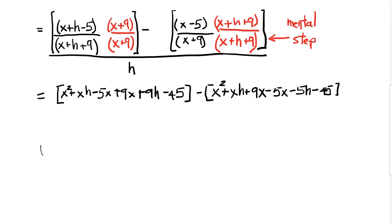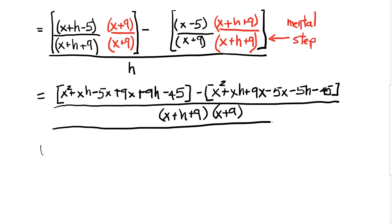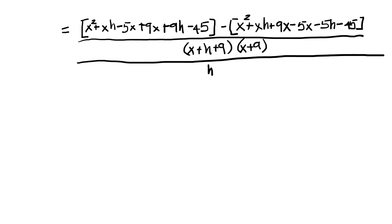Now the biggest mistake I see students make here is they don't use the parentheses. They're not doing what I did. And then we have all of this over the common denominator. So the common denominator there is going to be x plus h plus 9 multiplied by x plus 9. And I can't forget that I've got to divide this whole thing by h. Is it complicated? Yes, kind of.